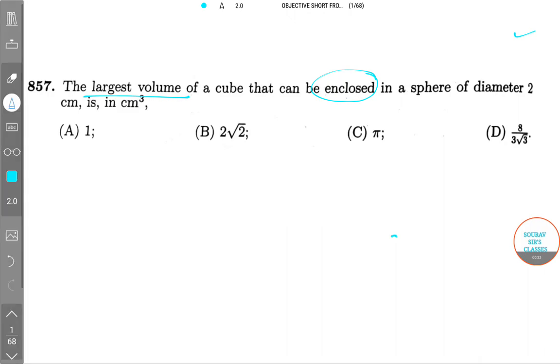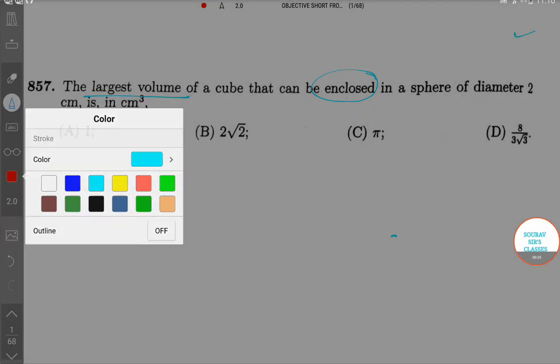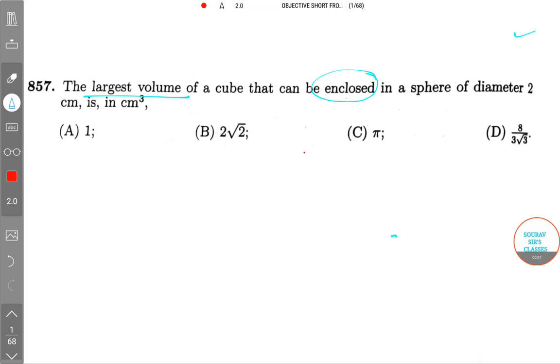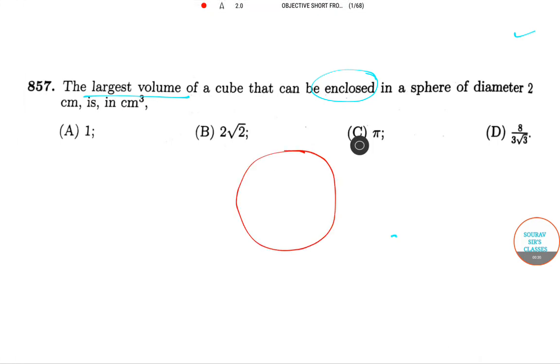So here in order to proceed, please allow me to draw the diagram first. Let me draw another circle here. Add the largest cube they are asking. So it will be a similar diagram like this. So this is a square format and along with this, so this is the another part.